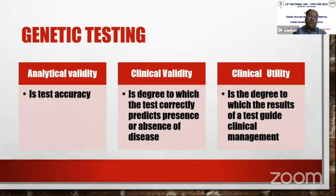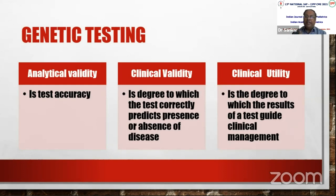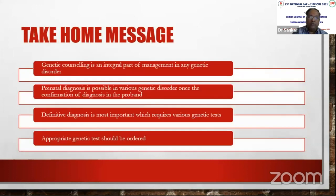When applying genetic testing, we must consider: analytical validity — is the test accurate; clinical validity — does the test correctly predict the presence or absence of disease; and clinical utility — does the test result guide clinical management. All these principles must be followed before administering a genetic test. Pre-test and post-test counseling should always be performed.